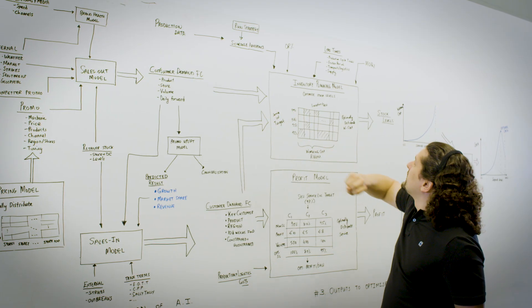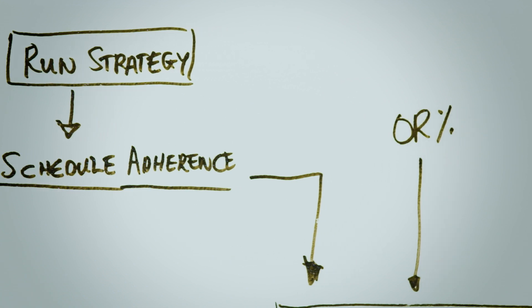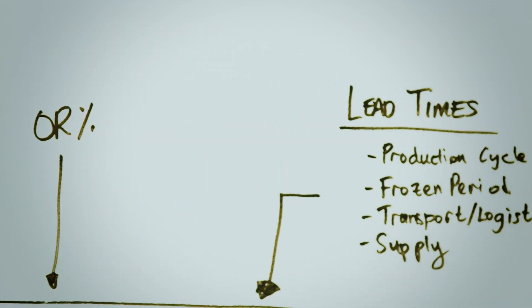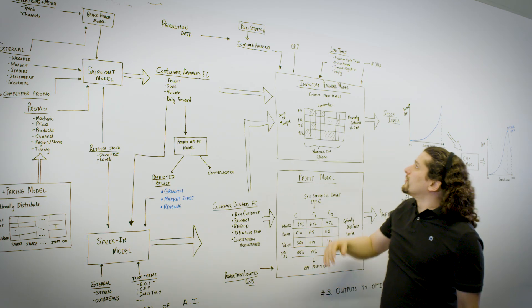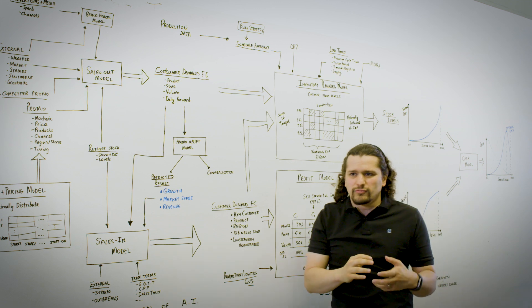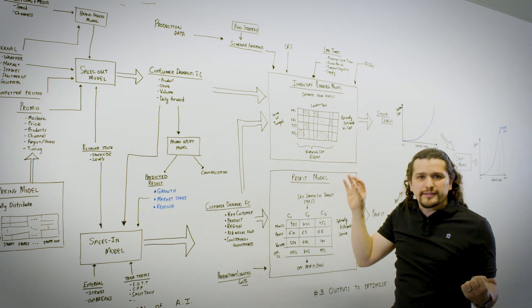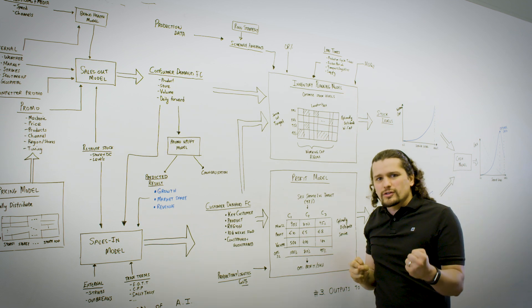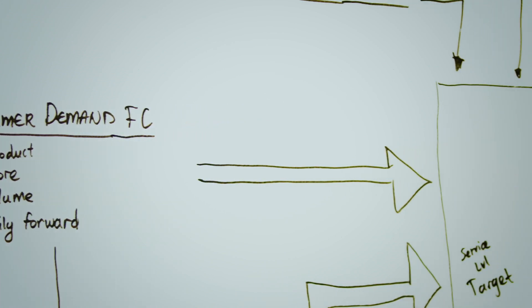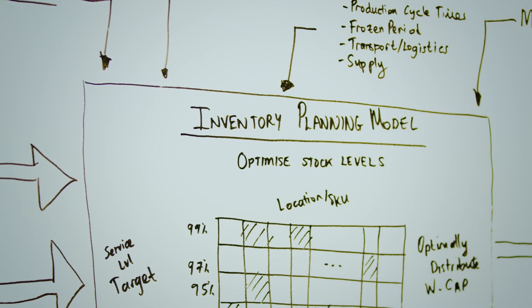The platform understands how production factors influence your inventory. So for example, if you can change your minimum order quantities by refactoring your production lines, the system will understand the influence this has on your risk and therefore the amount of stock you need to keep so that you can optimally allocate stock to your different products and to your different depots in order to maximize cash.